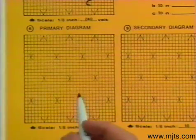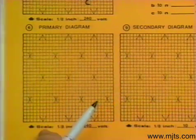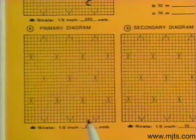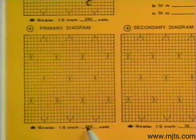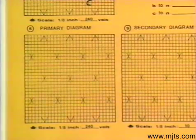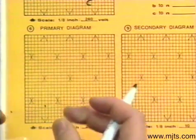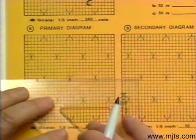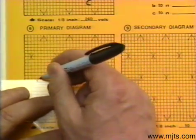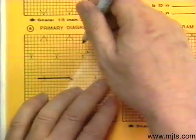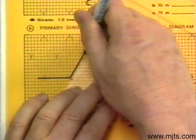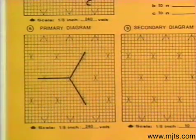Step six: on our primary diagram we want a Y connection to satisfy the voltage on the high side. The coil voltage is 2400 volts, so taking 240 into 2400 gives us 10 eighths, or one and a quarter inches. We draw vectors to scale. For a YY connection, we use a different procedure when labeling for polarity — uppercase letters A, B, and C for our phases on the high side.